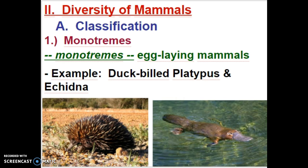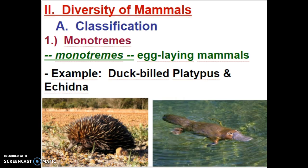There are three classes of mammals. The monotremes are by far the oldest of the mammals. They actually still carry one trait from their reptile ancestors, and that would be egg laying. So the monotremes are the only mammals that lay eggs. The only animals left of the monotremes are the duckbill platypus and the echidna.